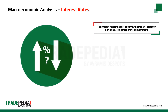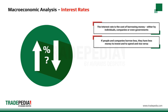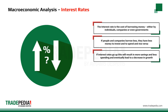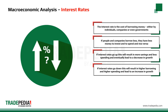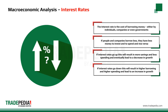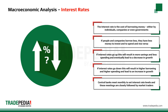The interest rate represents the cost of borrowing money, either by individuals, companies, or even governments. If people and companies borrow less, they have less money to invest and to spend, and vice versa. If interest rates go up, this will result in more savings and less spending, and eventually lead to a decrease in growth. On the other hand, if interest rates go down, this will result in higher borrowing and higher spending, leading to an increase in growth. Central banks meet monthly to set interest rate levels, and these meetings are closely followed by market traders.